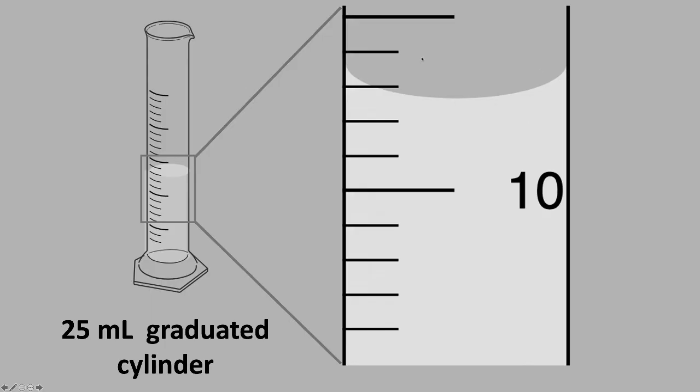And so here's an expanded view, and we can see that here's the 10 milliliter line, there's the 15 milliliter line, so we have lines showing the division for every unit.